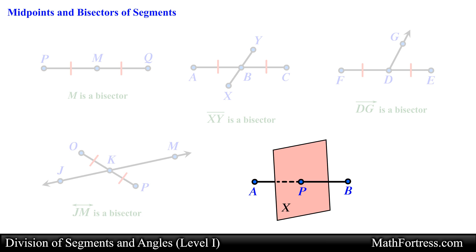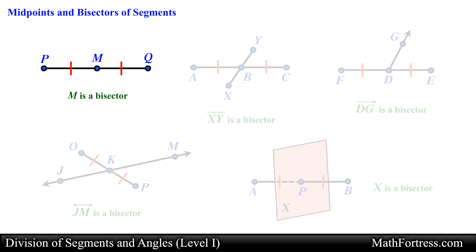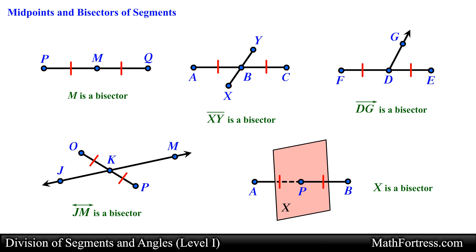As a final example, in the following diagram plane X bisects segment AB at its midpoint P. You can think of this plane as slicing segment AB at point P, creating two congruent segments — segment AP and segment PB. So a point, segment, ray, line, or plane can bisect a line segment, creating a midpoint which divides the segment in half into two congruent segments.